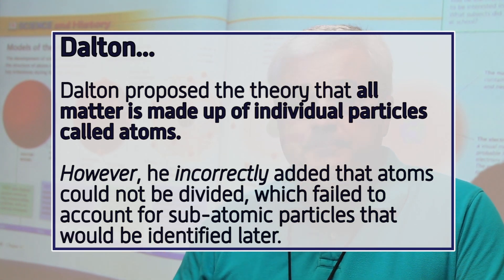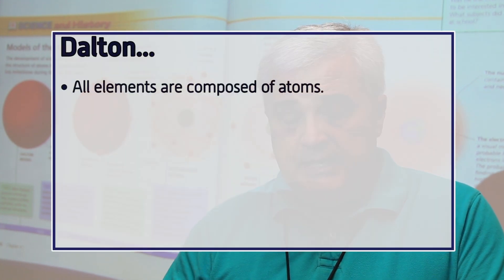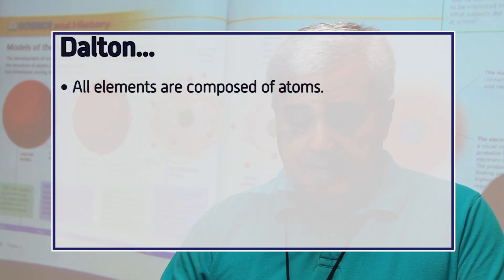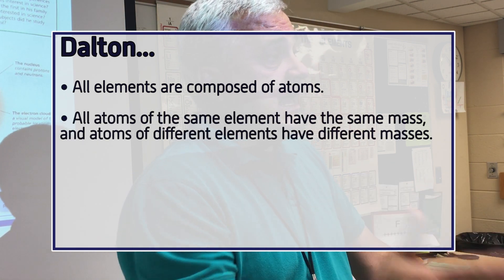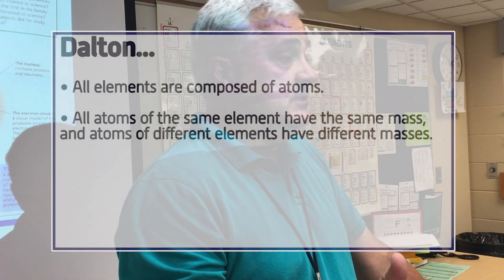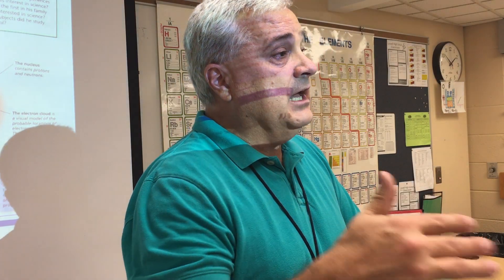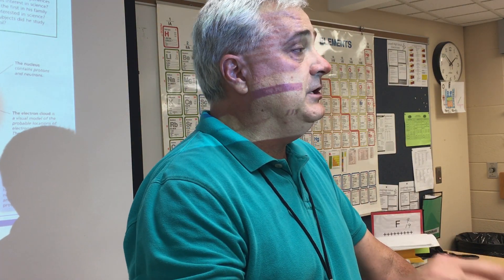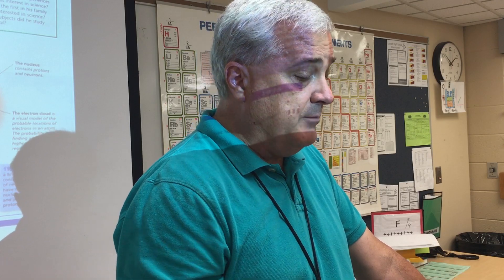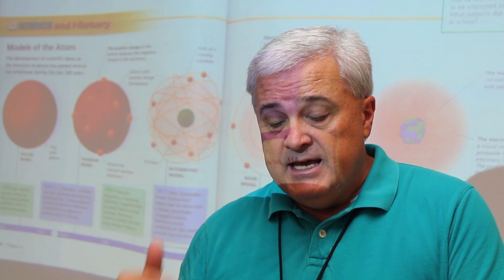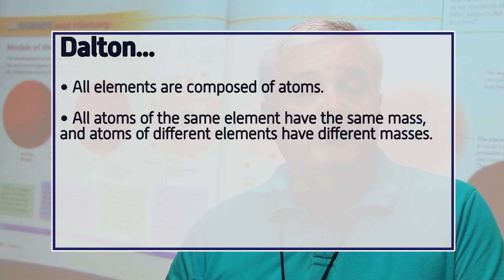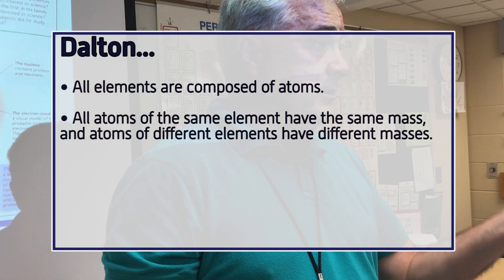Dalton said that all atoms of any given element have the same mass, and each element has its own particular type of atom. Atoms of the same element have the same mass and atoms of different elements have different masses. So an aluminum atom is going to be different from an iron atom.